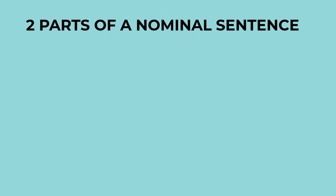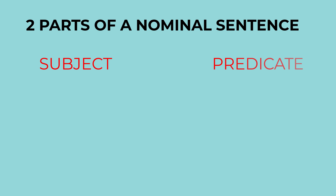Let's talk about this in English. In English, a nominal sentence has two parts — it is broken into two sections. Section number one is the subject, and section number two is the predicate.